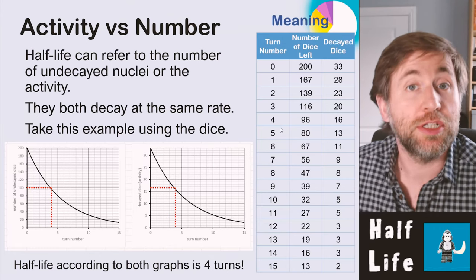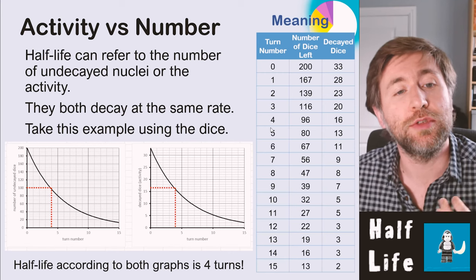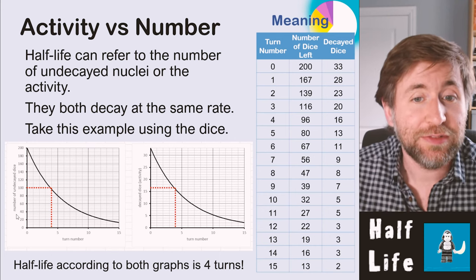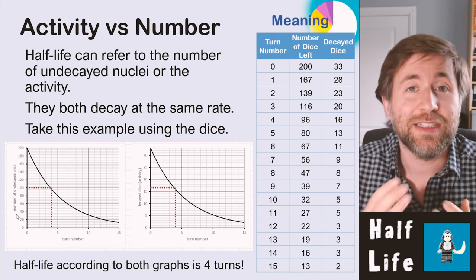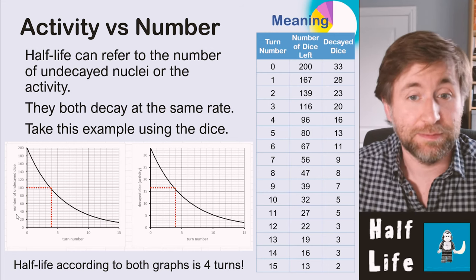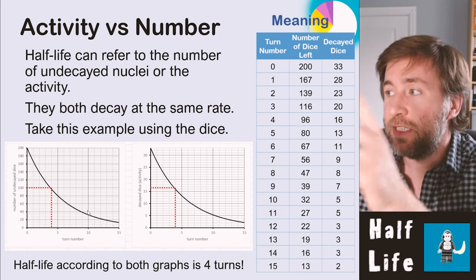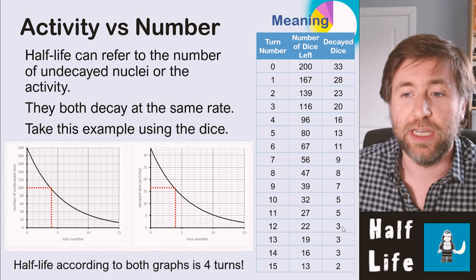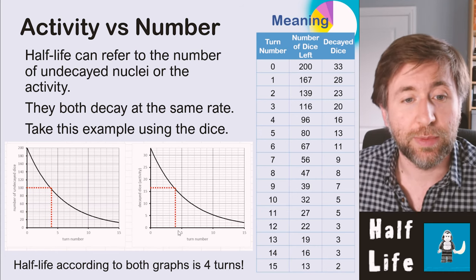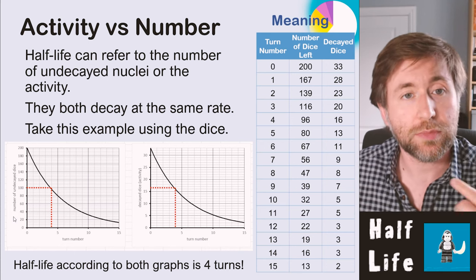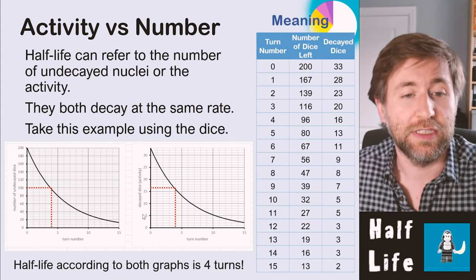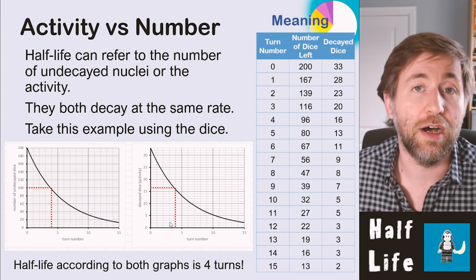The half-life should be exactly the same whether you're using a graph of number of undecayed nuclei, number of undecayed dice, or actual activity — the decayed dice each turn. Activity is how many decays there are per second, or per turn in this model. Although the numbers are different in the table, they follow the same trend, and both graphs give a half-life of four turns.